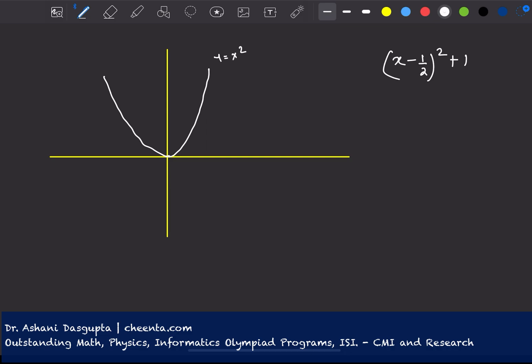Now x minus half square, I would like to transform this to x minus half square. So it will move to the right by 1 half unit. So it's like this now.